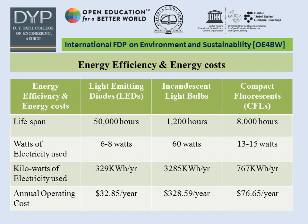Energy efficiency and energy cost: For LEDs, life span is 15,000 hours; for incandescent light bulbs, 12,000 hours; and for CFLs, 8,000 hours. LEDs use 6 to 8 watts of electricity; light bulbs use 60 watts; and CFLs use 13 to 15 watts. LEDs use 329 kilowatt-hours of electricity per year; light bulbs use 3,285 kilowatt-hours per year; and CFLs use 767 kilowatt-hours per year. The annual operating cost is correspondingly lower for LEDs.